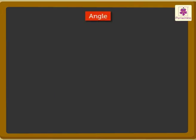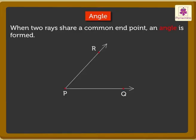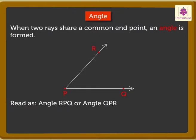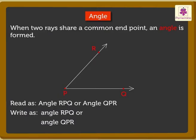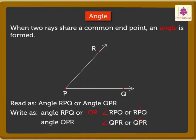Lastly, let's look at an angle. When two rays share a common endpoint, an angle is formed. We read it as angle RPQ or angle QPR. We write it as angle RPQ or angle QPR. We can also write using symbols — there are two symbols for an angle.